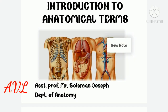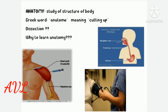Good morning all. Today we are going to discuss the introduction to the terminologies of anatomy. First, what is anatomy? Anatomy is a science that deals with the structural or morphological arrangement of various components of an organ, tissue or part of the body, and it is correlated with its function. The term anatomy is derived from a Greek word 'anatome' which means cutting up, so we are learning anatomy with the help of dissection.